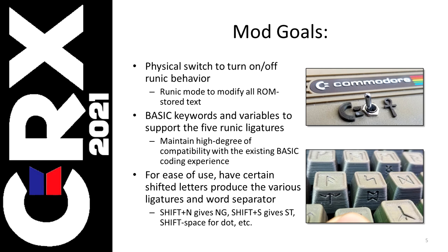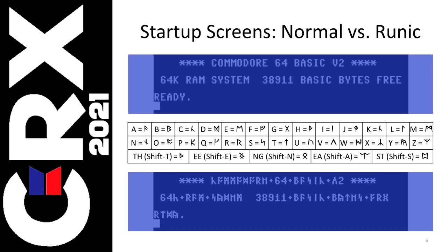The ligatures are on the front of the keys, not the top, meaning they're accessible when the shift key is down. Their placement is chosen so they're associated with a key that shares a letter in the ligature. For example, Shift-N gives you the NG symbol. I say intuitive, but intuitive doesn't mean obvious — it just means easier to remember once you know. In the pan over, you saw the switch that allows for the dual boot: the normal and the runic mode. If you look at the ready prompt, you can see that the runic version has four letters, because EA is one of the ligatures and it's been replaced by a single symbol.